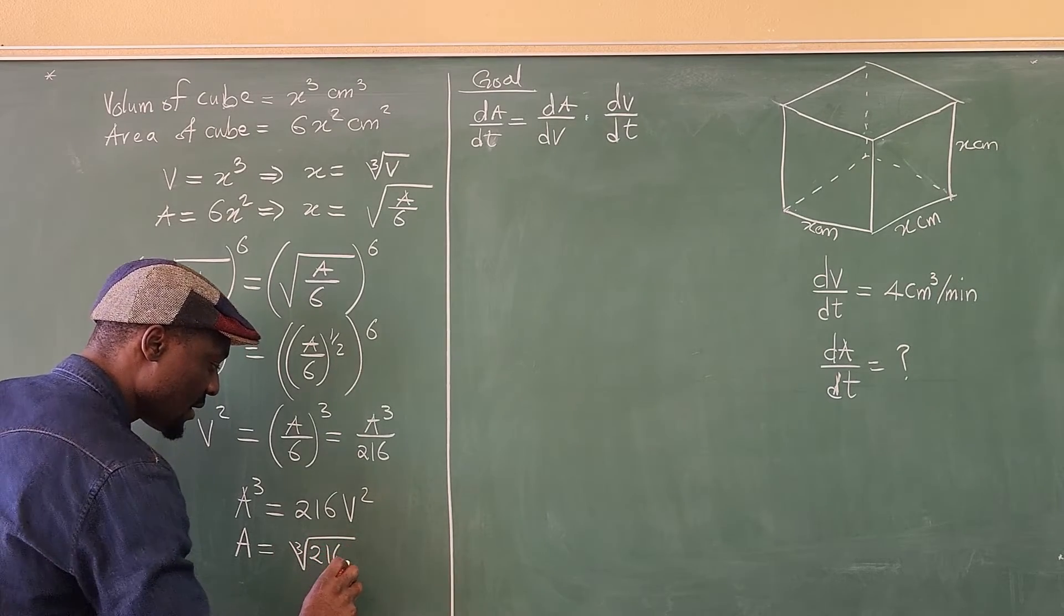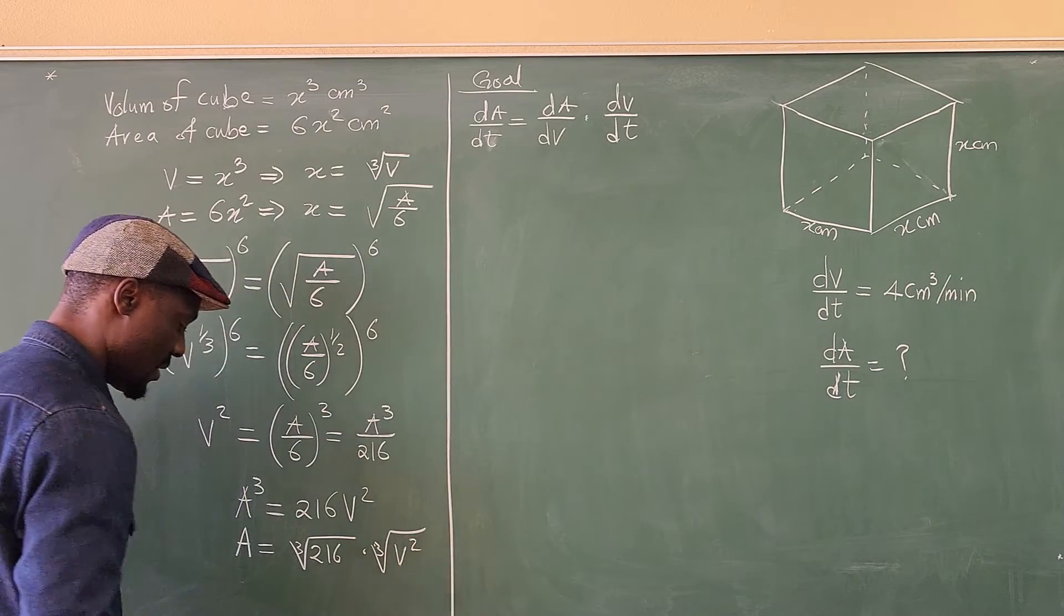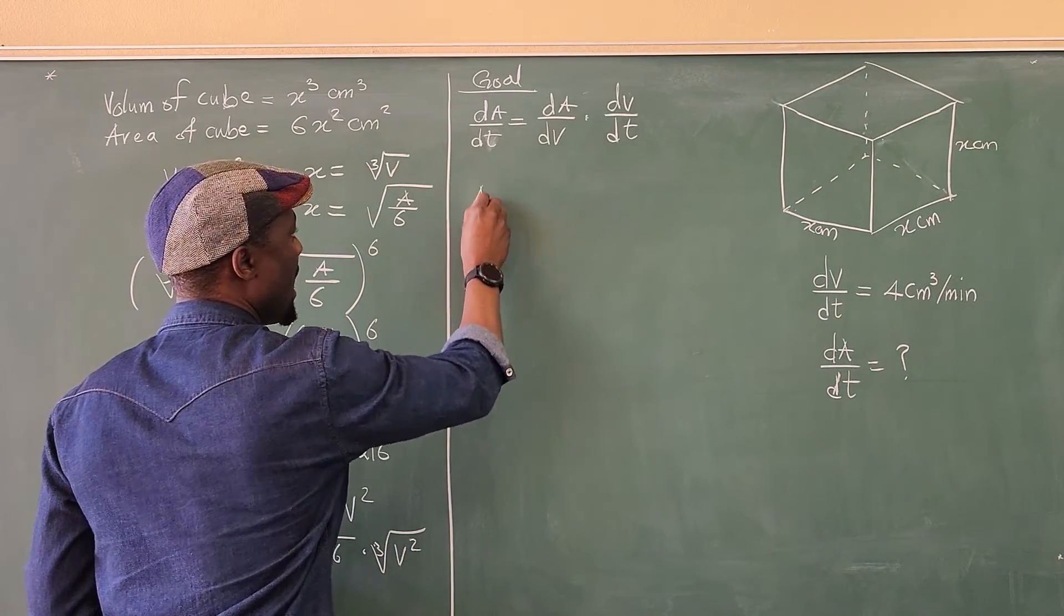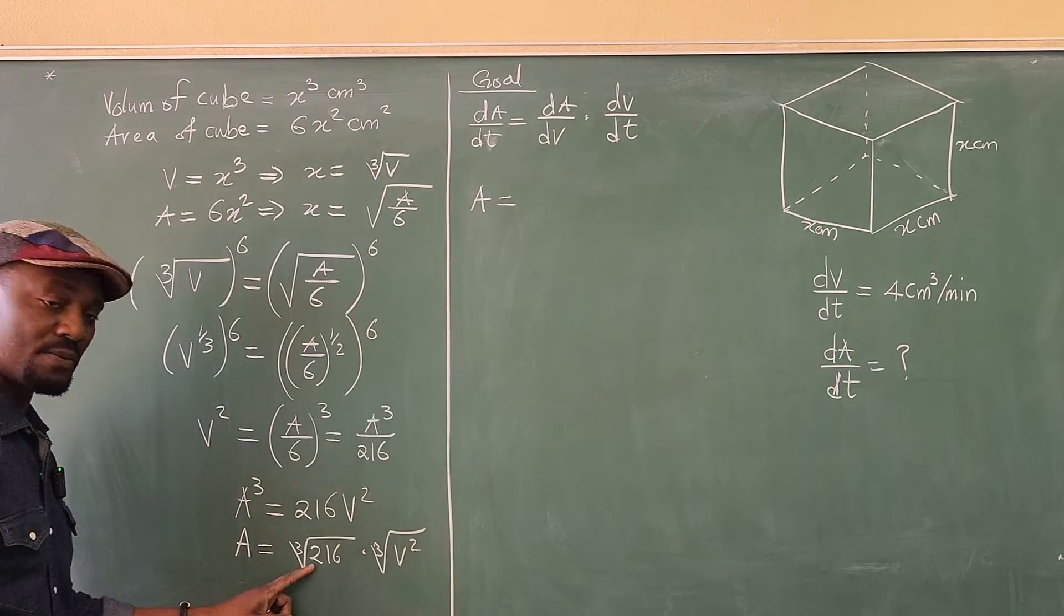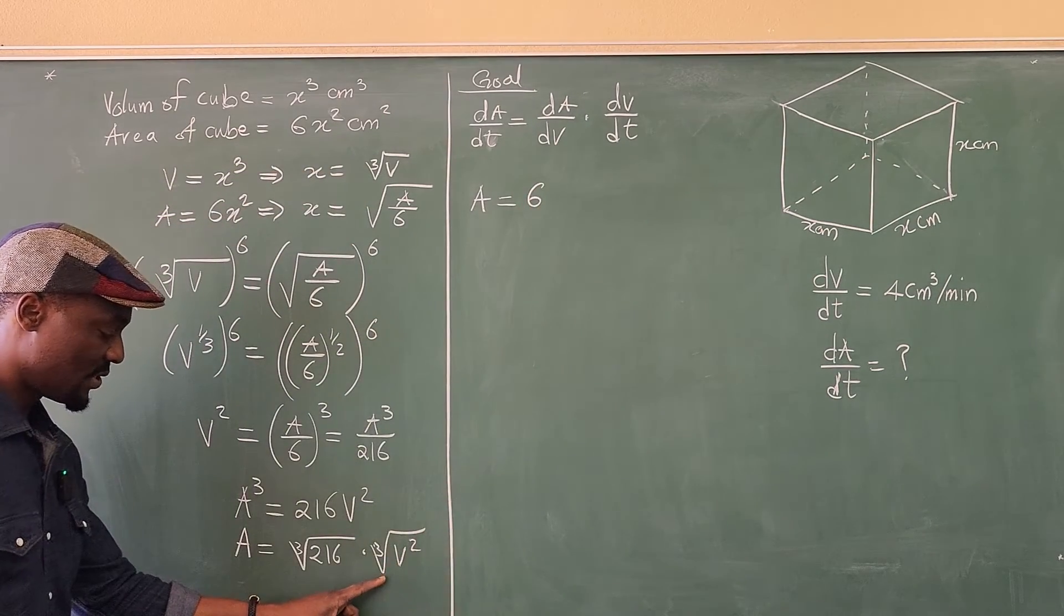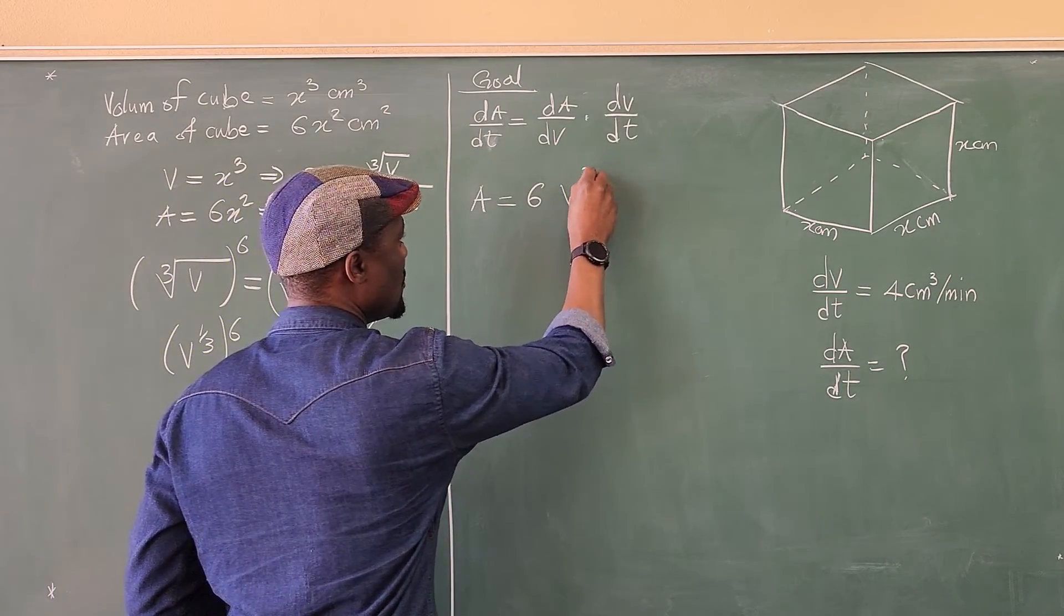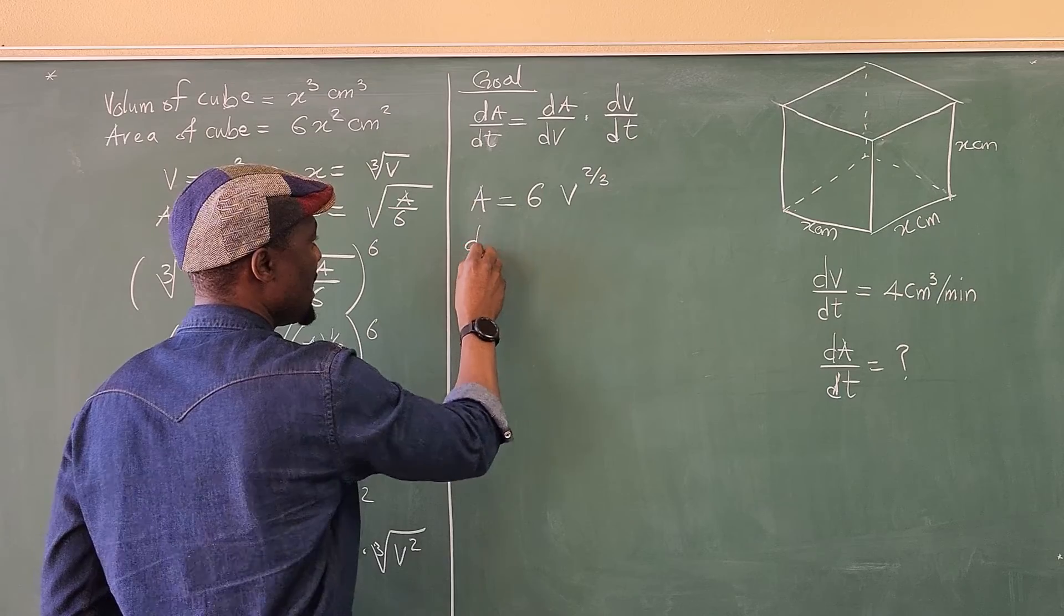Well, we end up with A equals, we know the cube root of 216 is 6. And this is going to be the cube root of V squared, which is going to be V to the two thirds. So what's dA/dV? Oh, that's even easier than I thought.